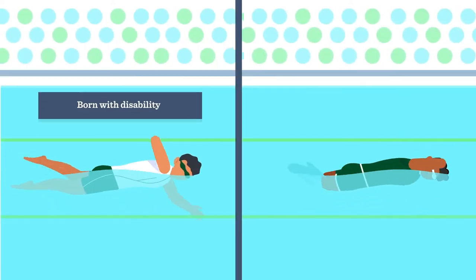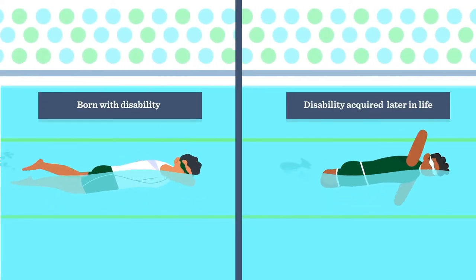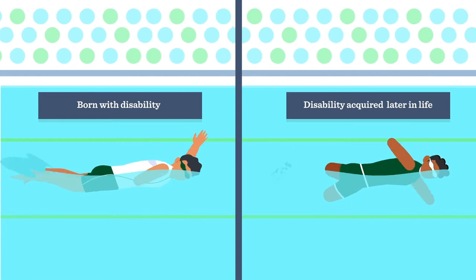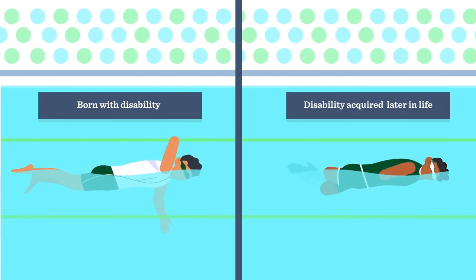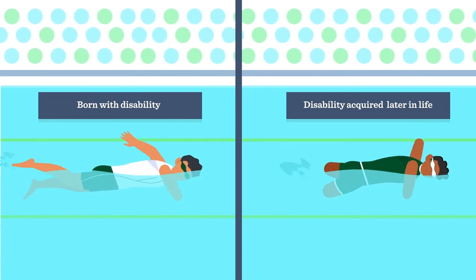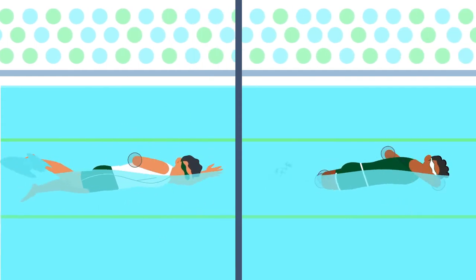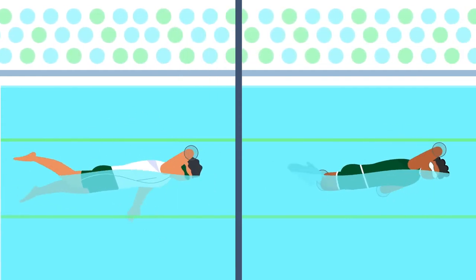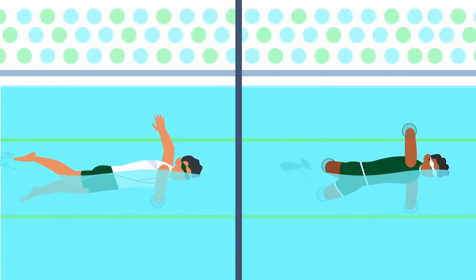Some athletes might have been born with a disability, while some might have acquired it later in life. There are different levels of impairment that can vary greatly, ranging from one limb being affected to all limbs and trunk being impacted.